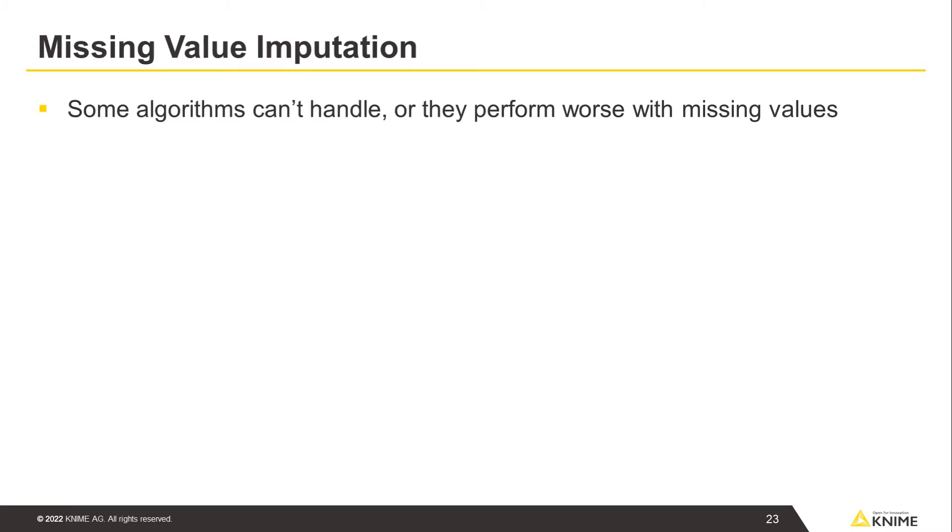The next data preparation step, although not necessarily the second one, is missing value imputation. Some algorithms can't handle missing values, or they perform worse with missing values in their training data. Missing values can also decrease the clarity of a dashboard.